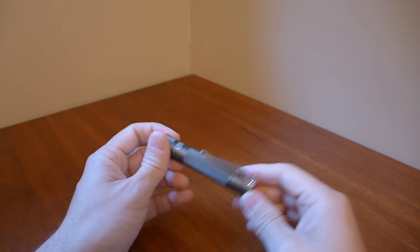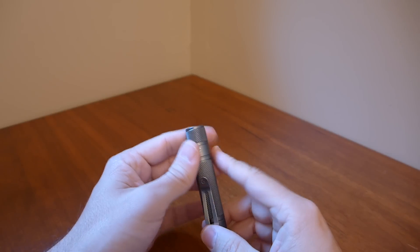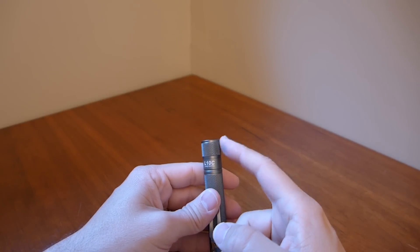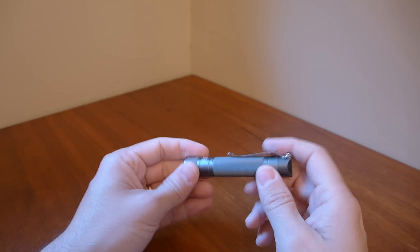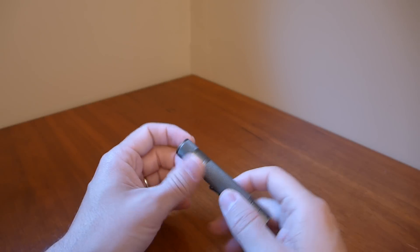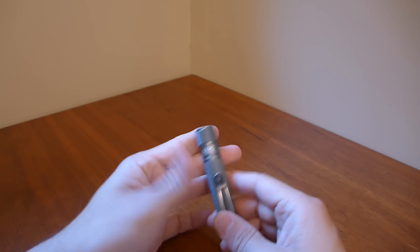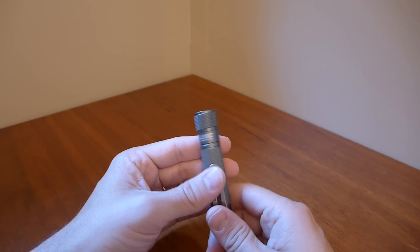But the real cool thing about this light is you get all of these features: you get the bolted on pocket clip, the Nichia 219 emitter, a good clicky, a good low, a good high, a nice small form factor, and you get all of this for a relatively inexpensive price of $33.